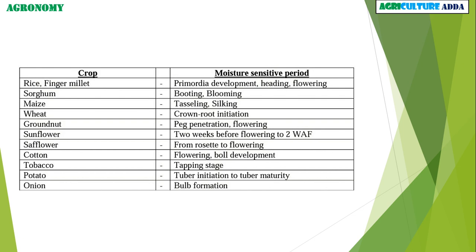Like onion, many other crops have their critical stage for irrigation. This is also called the moisture sensitive period. Please note this and, if possible, take a screenshot and memorize it.